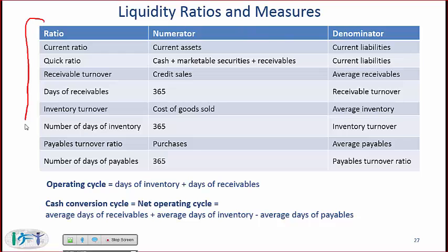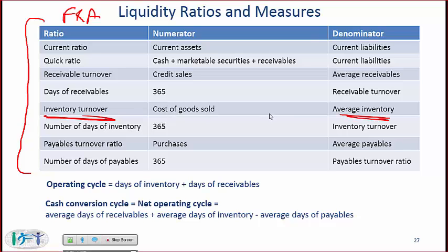Almost all these liquidity ratios are ratios you have also seen in FRA. You should know all these ratios and be able to look at a ratio name — for example, inventory turnover — and immediately know it involves inventory in the denominator as a balance sheet item, with the corresponding income statement item being cost of goods sold. The balance sheet item is typically the average for that period. Number of days of inventory is the inverse multiplied by 365. Operating cycle and cash conversion cycle are also items you need to know well.